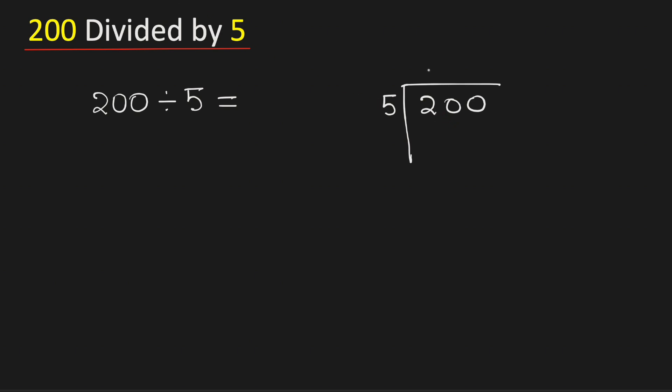Now we know that 5 times 4 is 20. Subtract, we get 0.